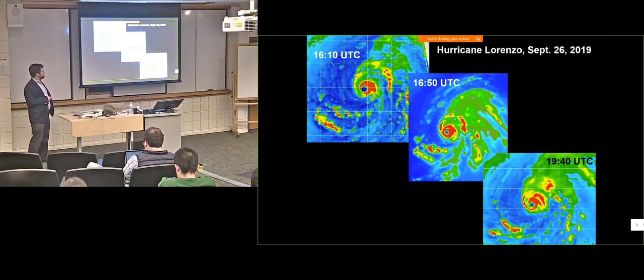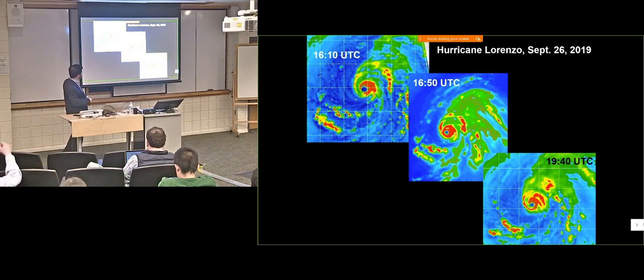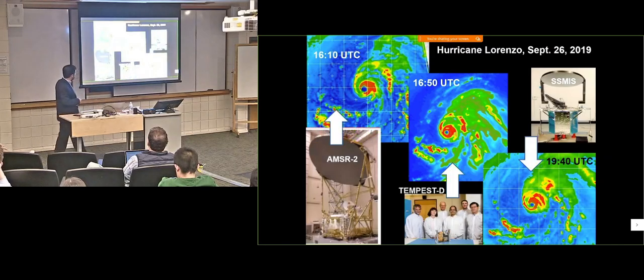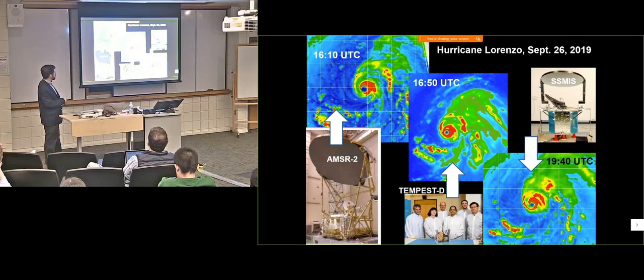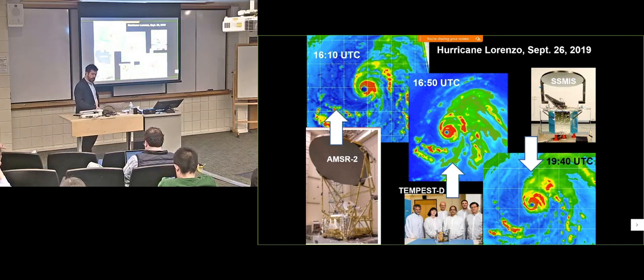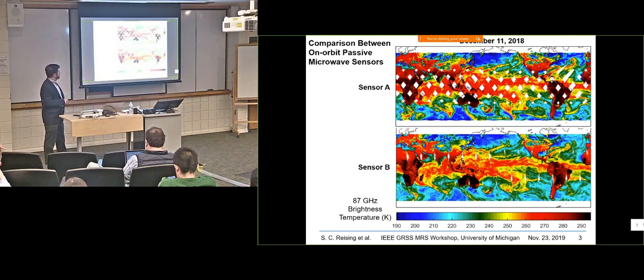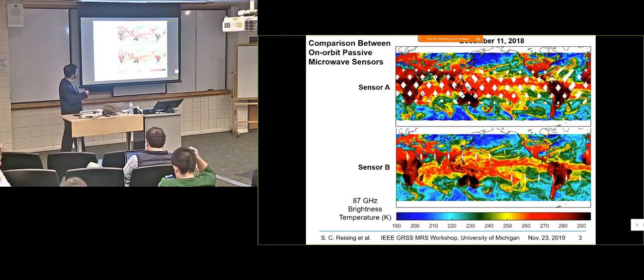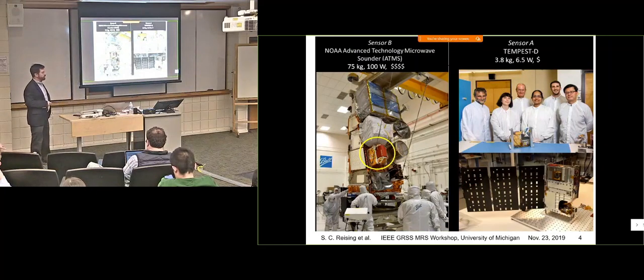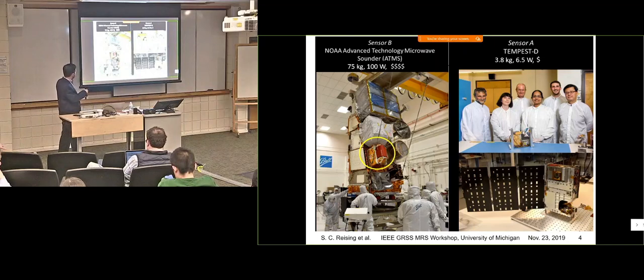Here you see three images from Passive Microwave. And the question is, can you tell just by looking which one came from a CubeSat? Well, it turns out to be the center one is from a CubeSat. This is the team. These others are basically operational instruments, AMSIR-2 and SSMIS. And so then we can look at not only Hurricane Lorenzo here from this September 26th, but we can look at the whole globe.